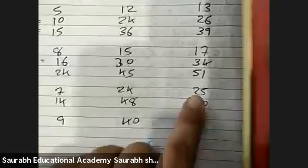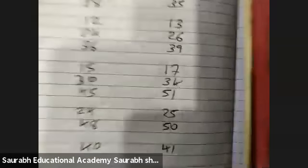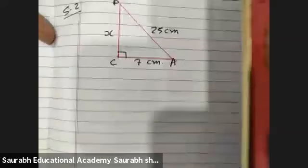If hypotenuse is 25 and one side is 7, then definitely the other side should be 24. So you will get the answer orally. Now, you have to do it by the formula.